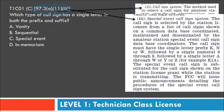That answers the question right there. The call sign is selected by the station licensee from a list of call signs on a common database, coordinated, maintained, and disseminated by the amateur station special event call sign database coordinators. For example, the call sign must have a single letter prefix K, N, or W, followed by a single numeral 0 through 9, followed by a single letter A through W, Y, or Z — for example, K1A. The special event call sign is a substitute for the licensee's regular call sign while transmitting. The FCC will issue public announcements detailing the procedure.